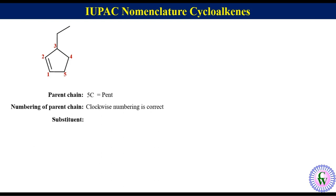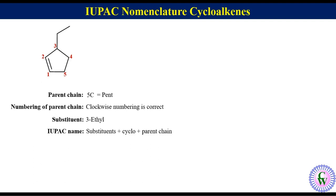There is one ethyl substituent at C3, so it will be written as 3-ethyl. Now we will merge this information to get the IUPAC name: substituents plus prefix cyclo plus parent chain plus -ene, which will be 3-ethyl + cyclo + pent + ene. So the IUPAC name of this molecule will be 3-ethylcyclopentene.